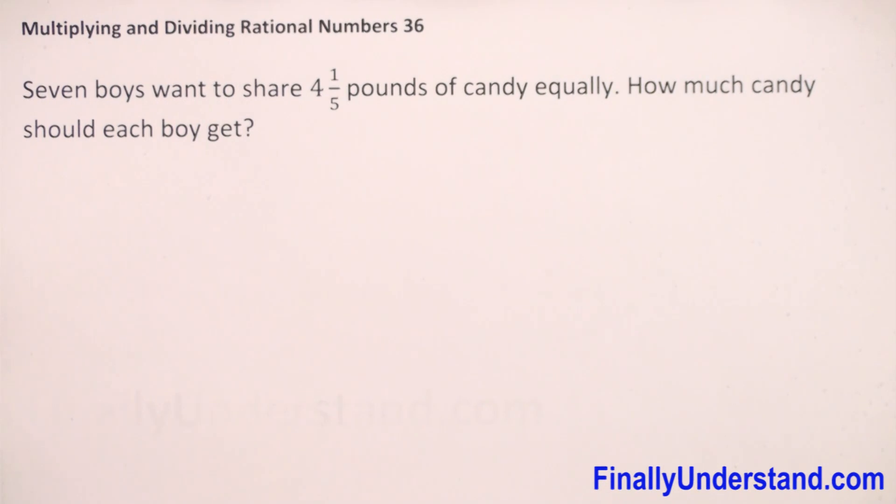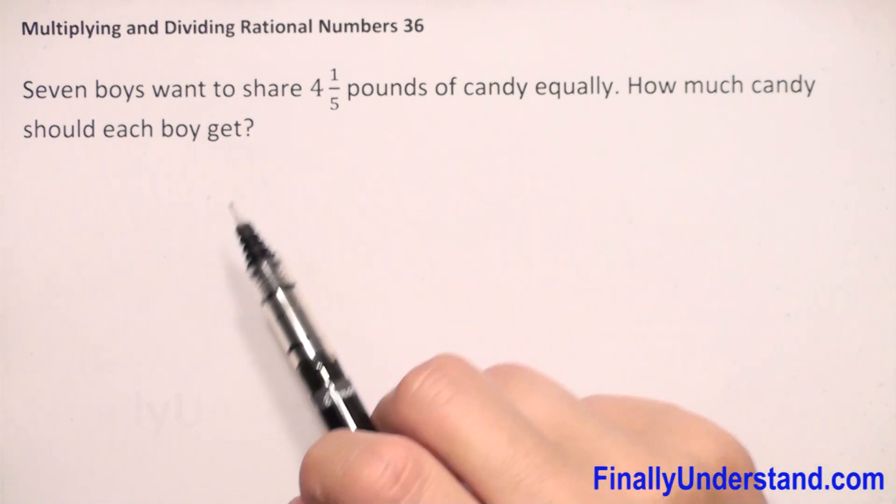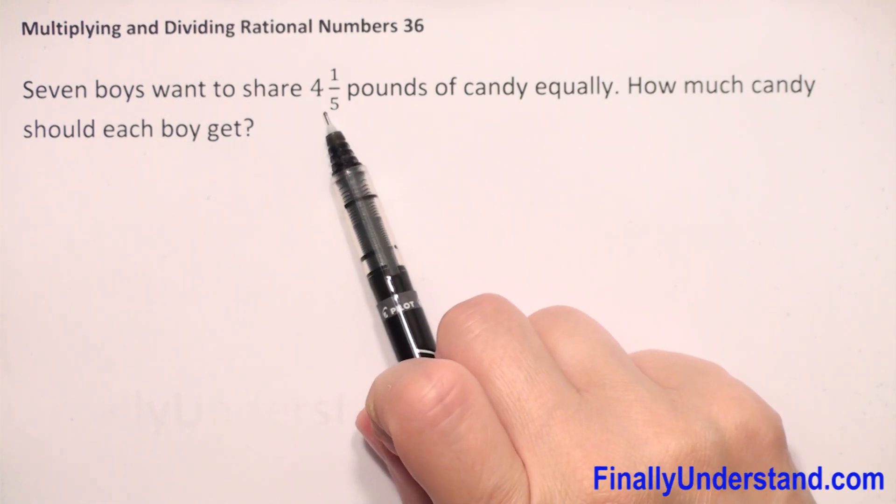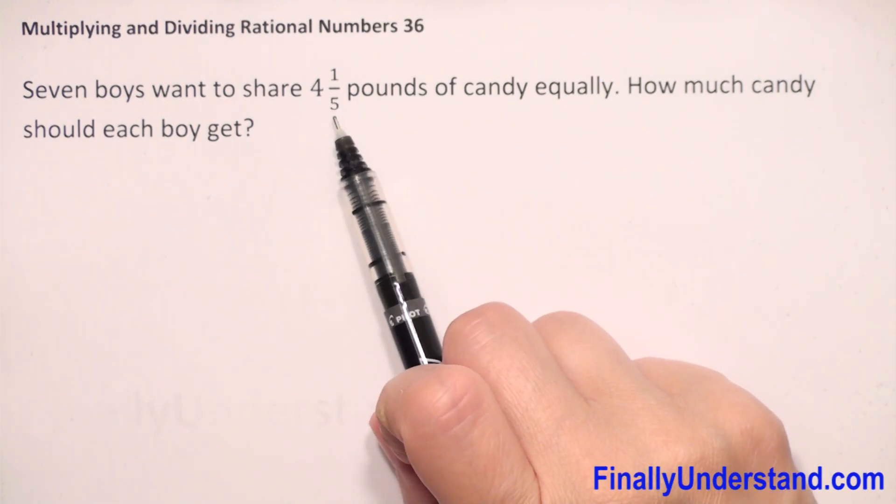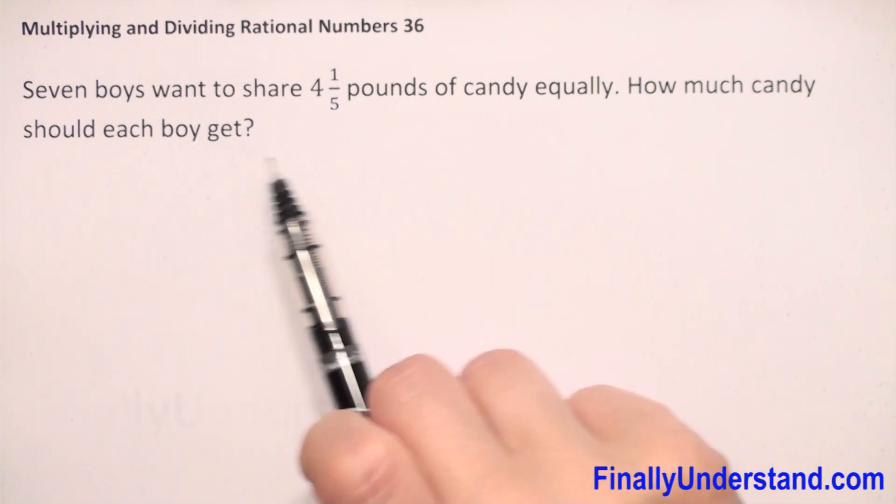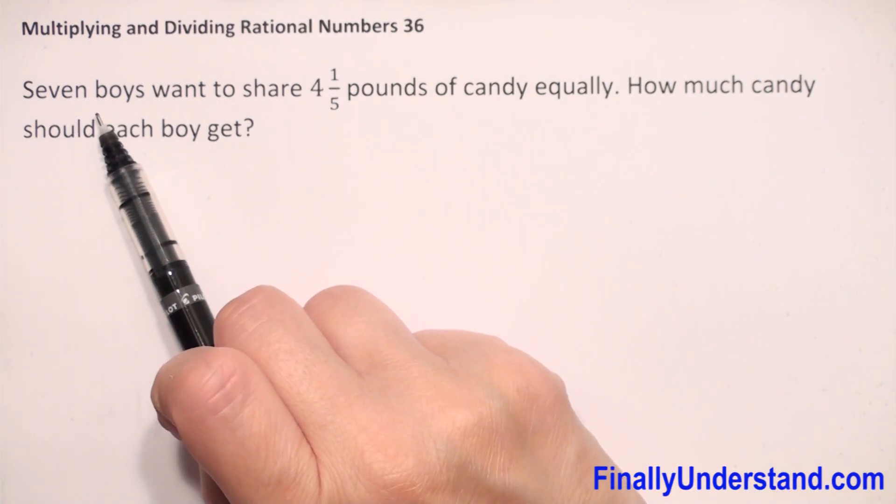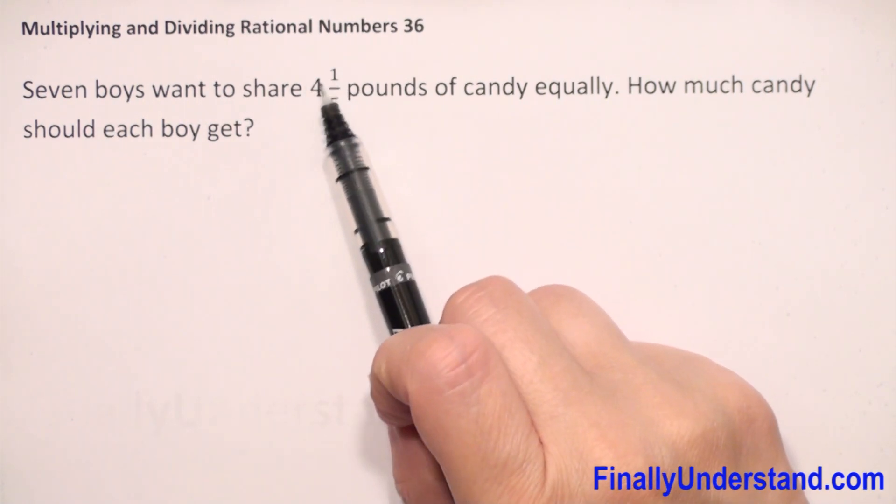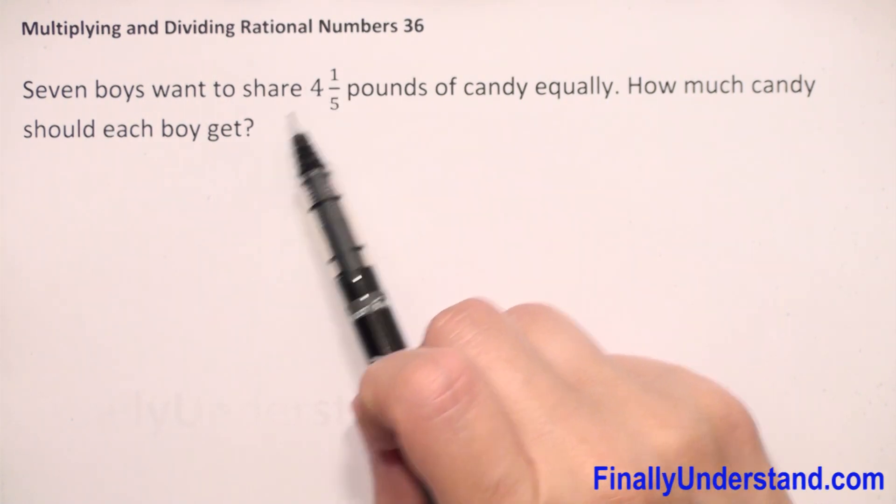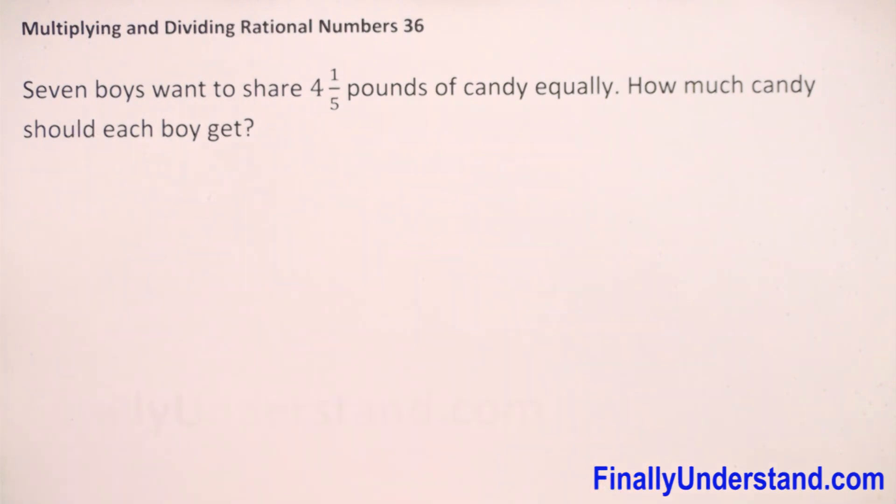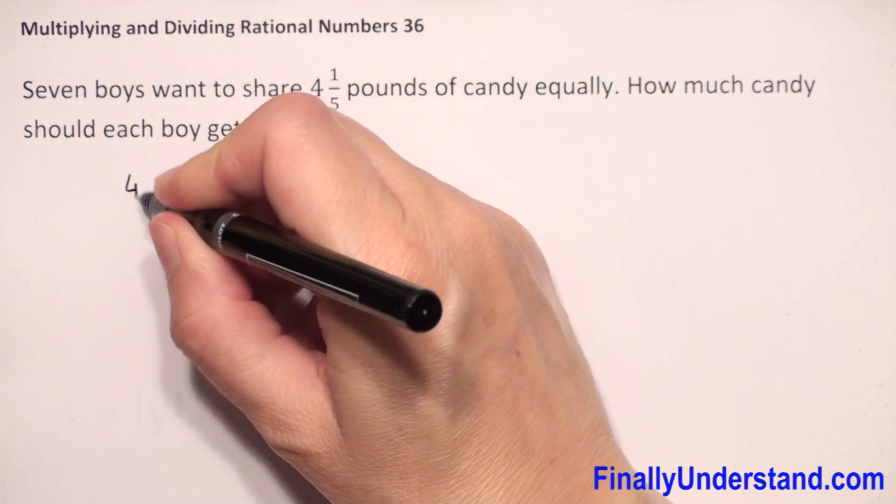Seven boys want to share 4 and 1/5 pounds of candy equally. How much candy should each boy get? We are given 4 and 1/5 pounds of candy and we have seven boys, so we have to divide the candy by the number of boys. So we have 4 and 1/5...